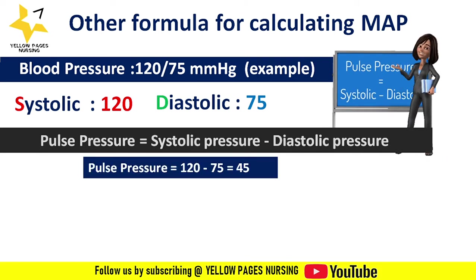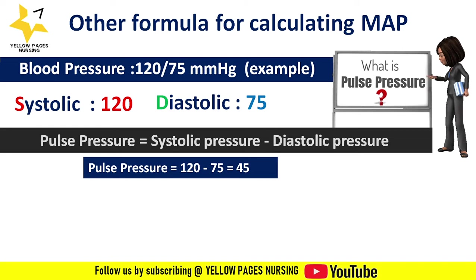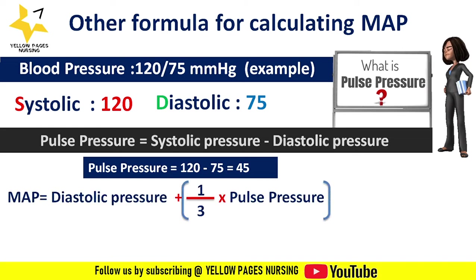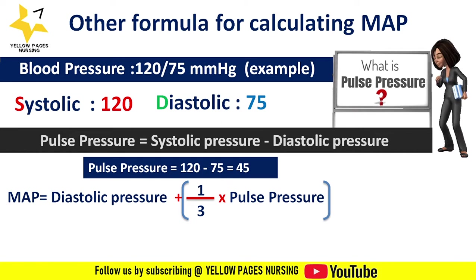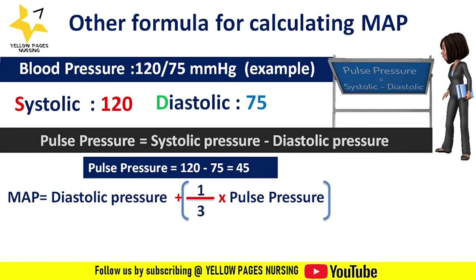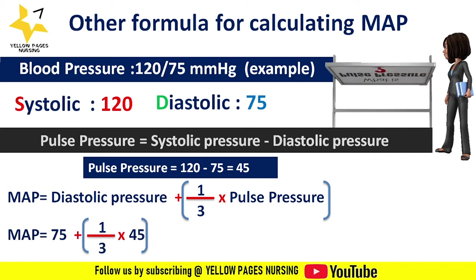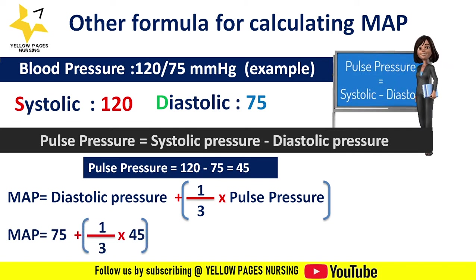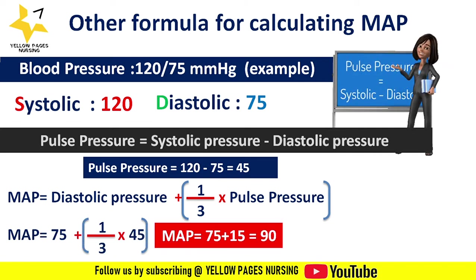The second formula for mean arterial pressure is: MAP = DBP + (1/3 × pulse pressure). Applying this to our example, the mean arterial pressure is again 90 mmHg.